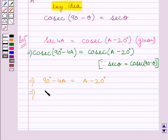Adding 20 degrees on both sides, we get 110 degrees minus 4A equals A. Adding 4A on both sides, we get 110 degrees equals 5A.